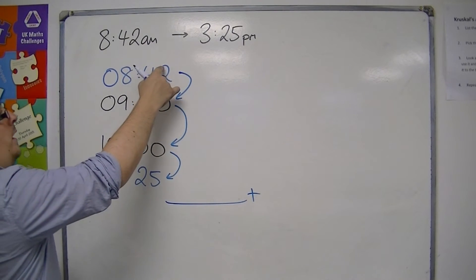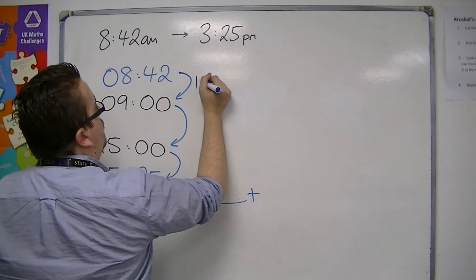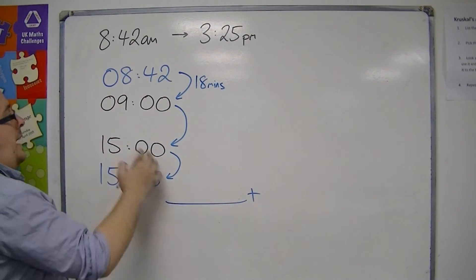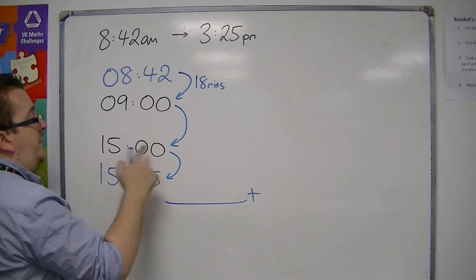So I've got 18 minutes from 8:42 AM to 9, so 18 minutes. And then from 9 o'clock to 3 o'clock, there's going to be 6 hours.